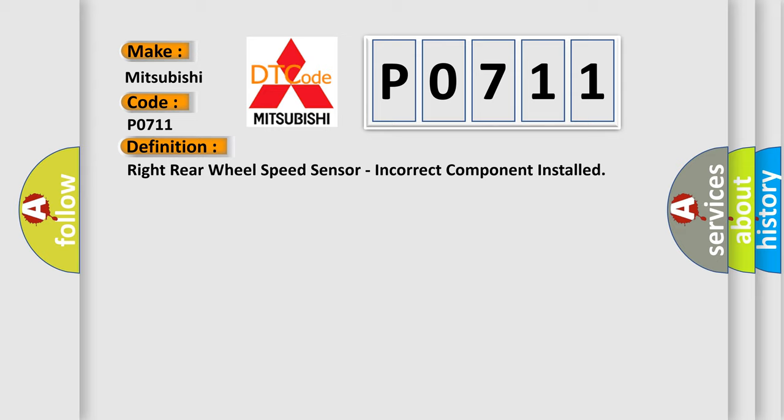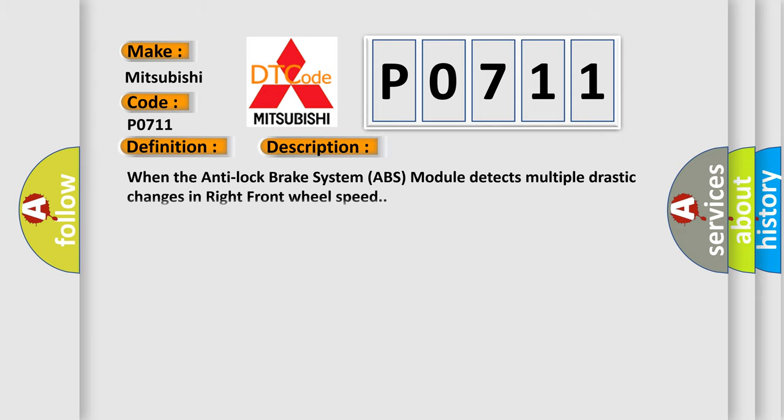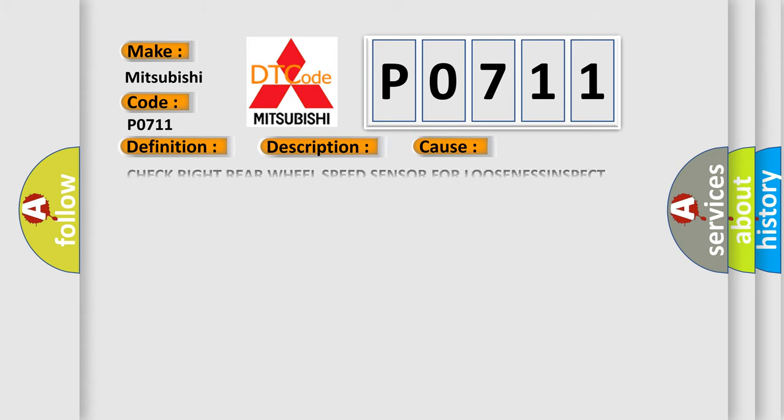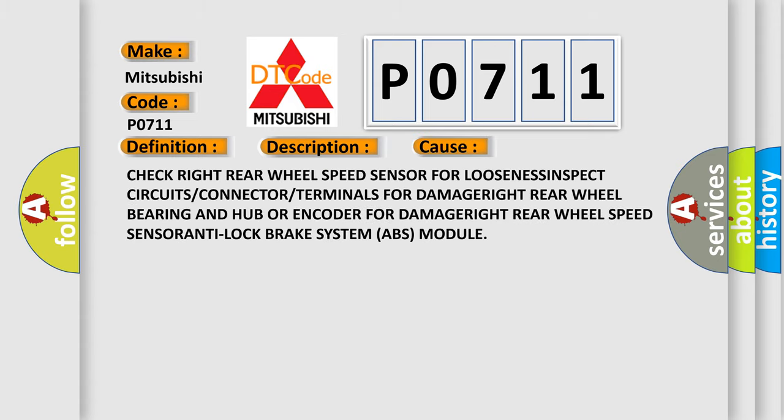And now a short description of this DTC code. When the anti-lock brake system (ABS) module detects multiple drastic changes in right front wheel speed, this diagnostic error occurs.